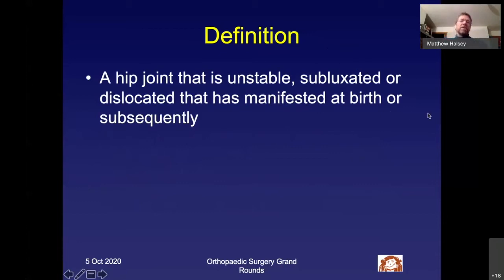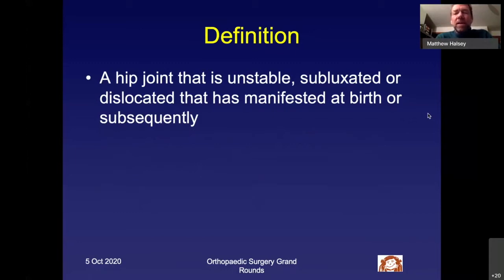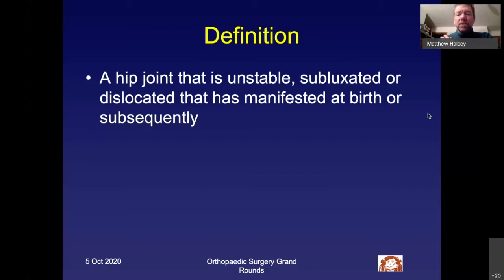By definition, a developmental dysplasia of the hip is a hip joint that is unstable — you can take it out of joint and put it back in. It is subluxated at rest or dislocated at rest. This can be manifested at birth or later, after three, six months, or even a year. Generally, if the hip is well located at a year, it is unlikely to dislocate later unless the patient has something like Down syndrome or another condition causing ligamentous laxity.